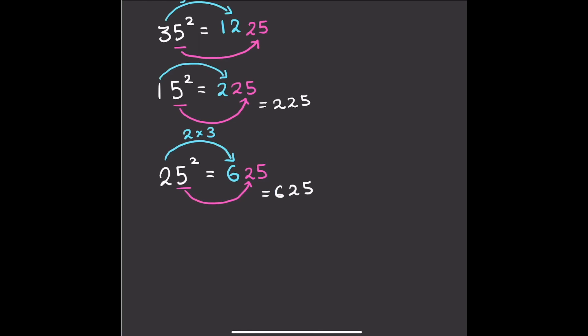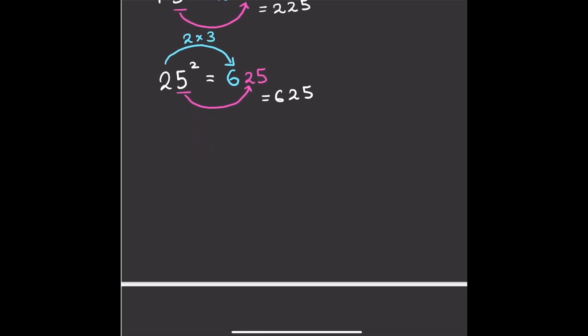Let's go to the next one, which is obviously going to be 45 squared. Same thing again — 5 times 5 is 25. And then we're going to times 4 by its next highest number, which is obviously 5. So we're going to get 4 times 5, which is 20, and we write that 20 down. So the answer is 2,025.